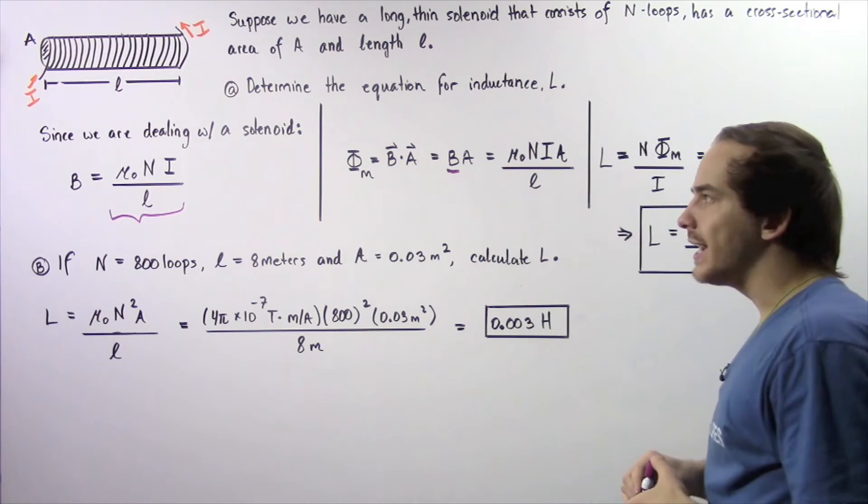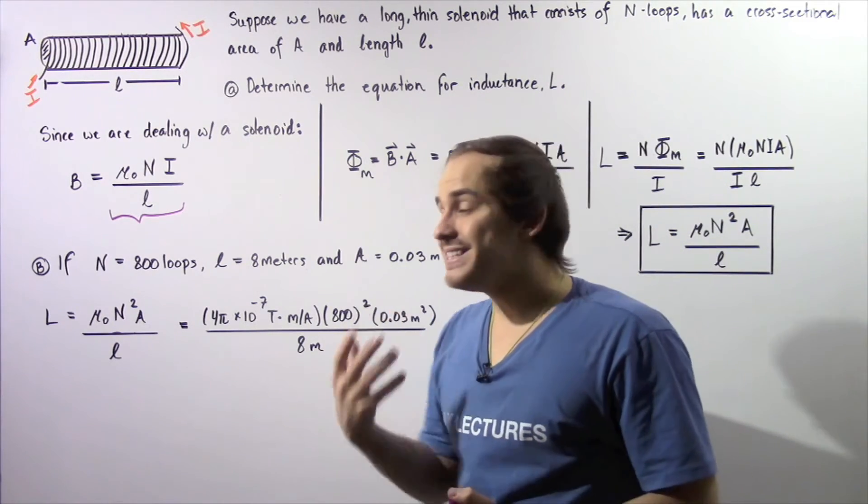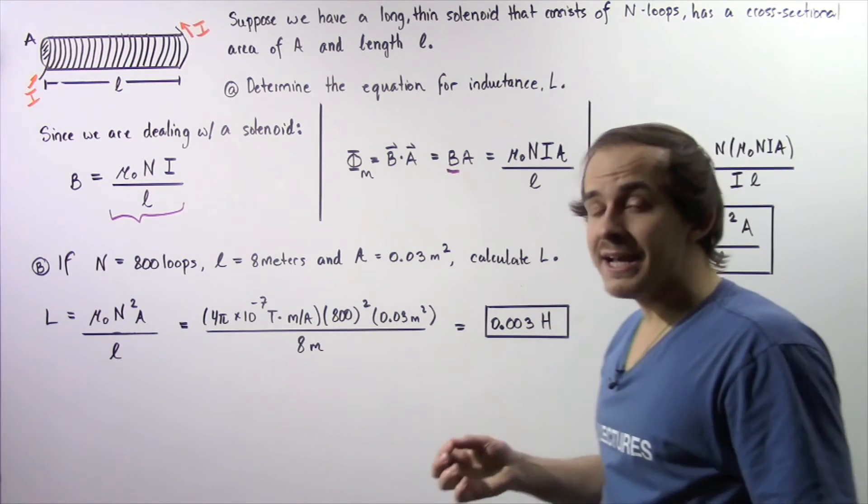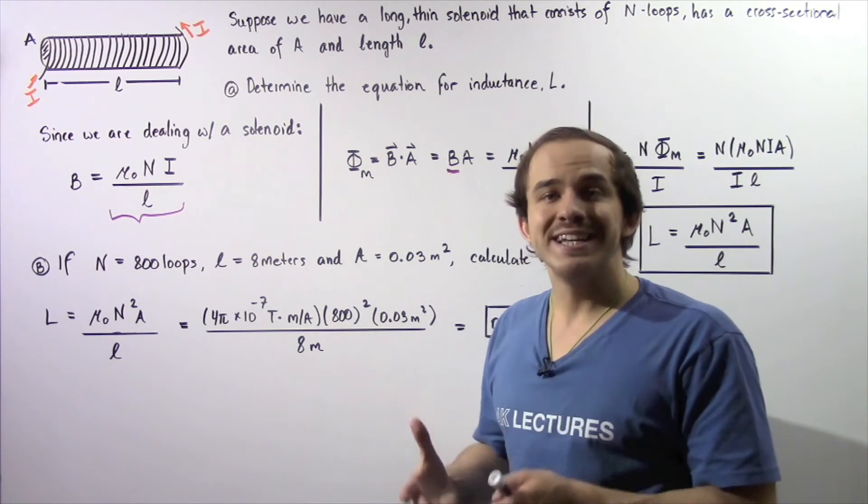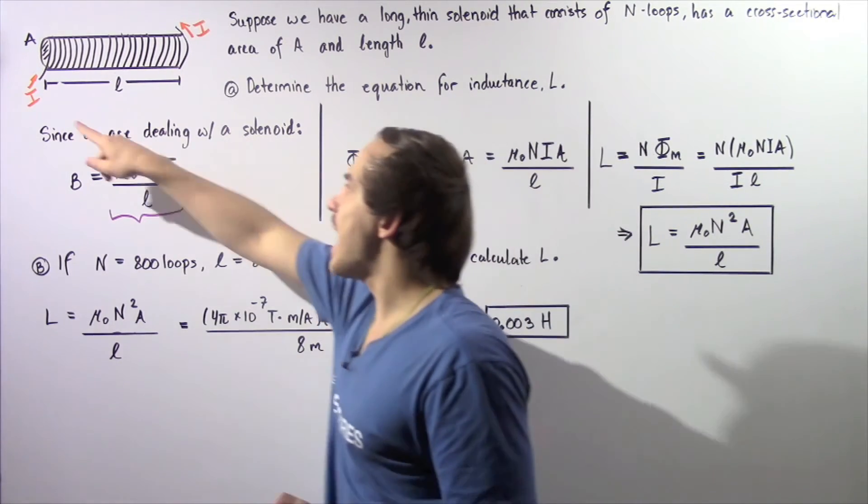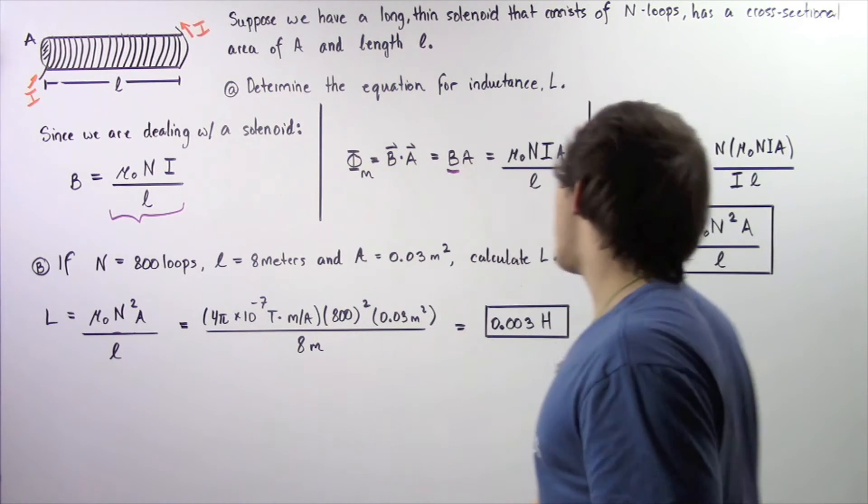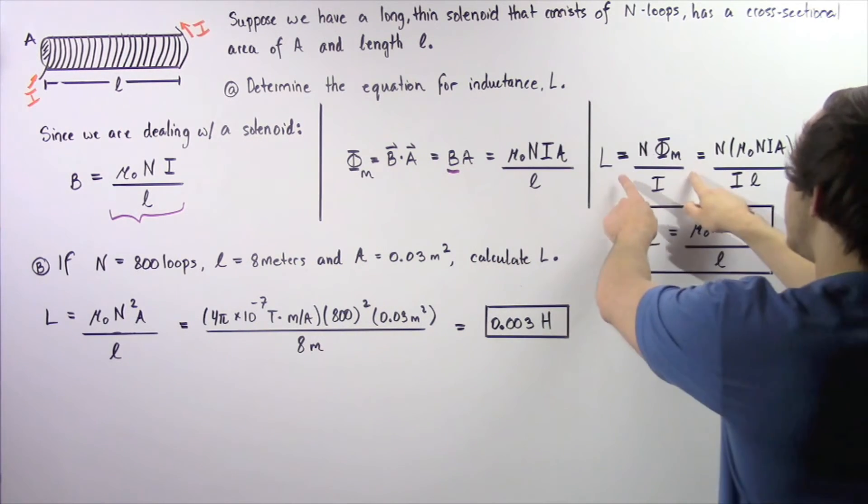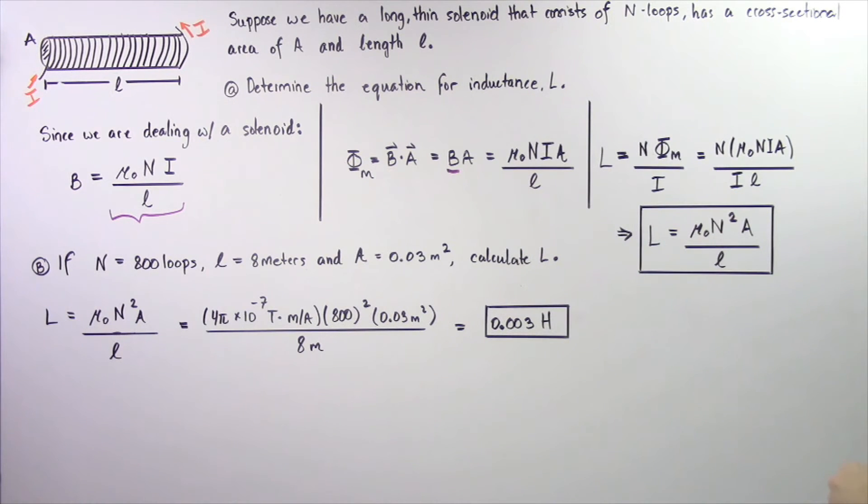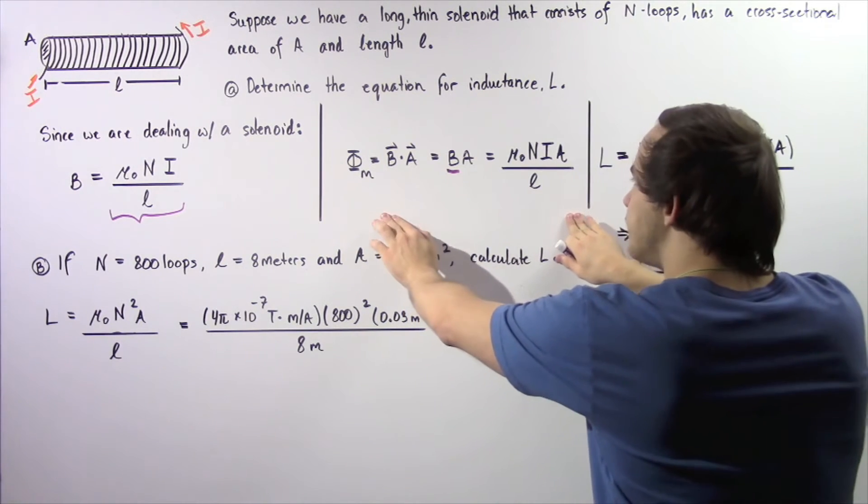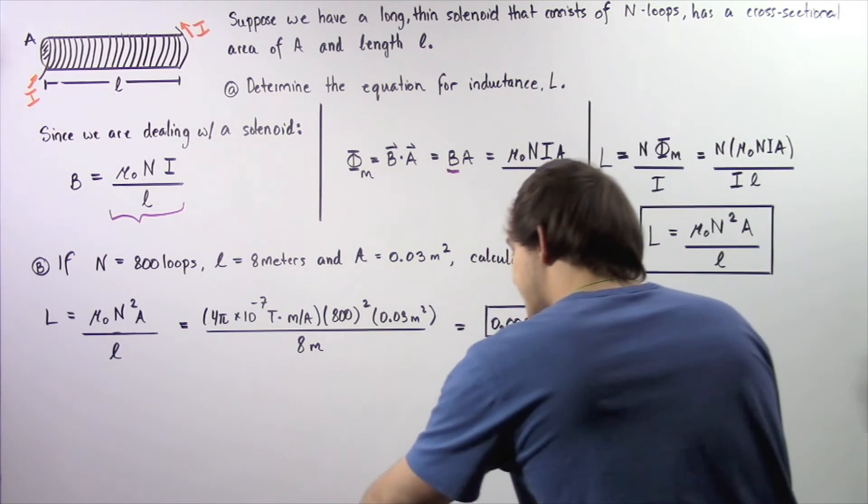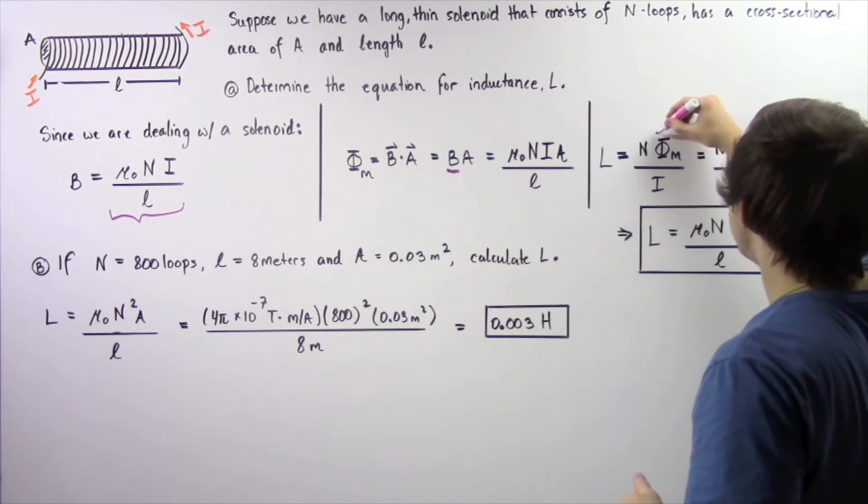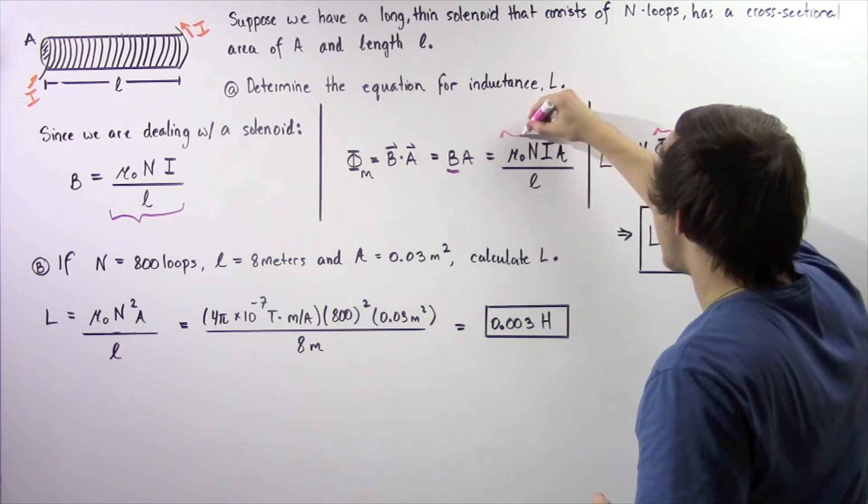Inductance given by L was defined as the product of N, the number of loops of wire, and our magnetic flux, divided by our electric current that flows through our loops of wire. This is the equation we defined in the previous lecture and it comes from experimental results. In this section we defined our magnetic flux using the following equation. So once again, let's take this and replace this quantity with this entire equation.